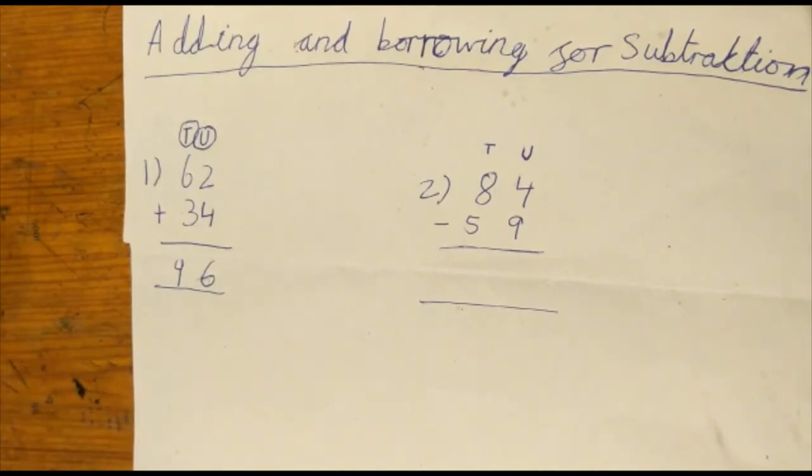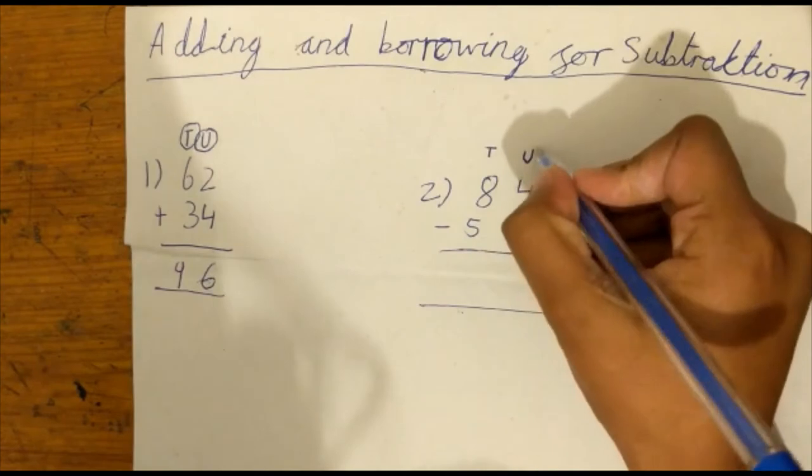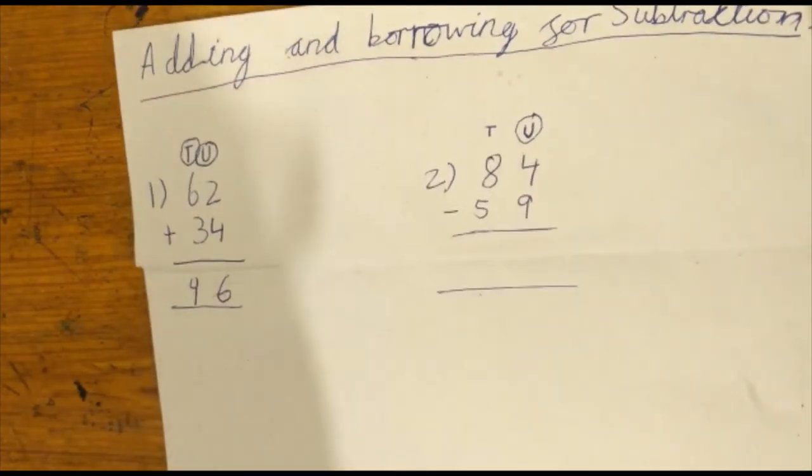And then there's another question, 84 take away 59. So we're going to start with the units again. You cannot do 4 take away 9, but you can do 8 take away 5.